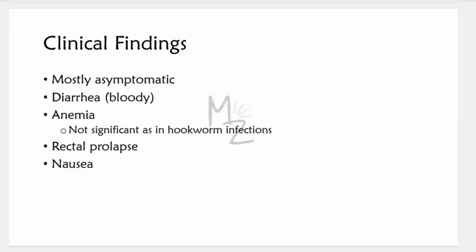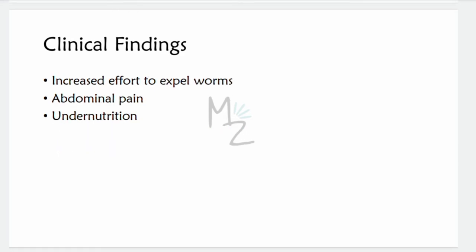Clinical findings: the disease is mostly asymptomatic but can present with diarrhea including bloody diarrhea, anemia unlike that of hookworms, rectal prolapse, and nausea. You can remember these by the mnemonic DARN: D for diarrhea, A for anemia, R for rectal prolapse, N for nausea. Additional findings include increased effort to expel worms, abdominal pain, and undernutrition.